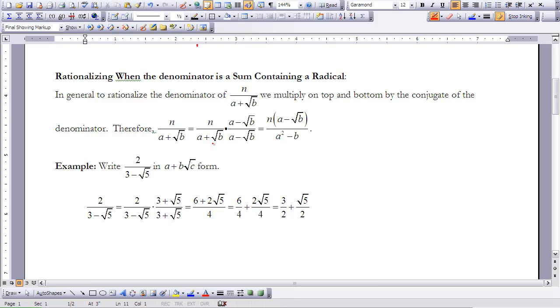Let's try this with an example problem: 2 over 3 minus the square root of 5. So we're going to take the conjugate of that, so that would be 3 plus the square root of 5 right here. Remember, 3 plus the square root of 5 over 3 plus the square root of 5 is the same as multiplying by 1, so I'm not changing its value, I'm just changing how it looks. So 2 times 3 and 2 times the square root of 5 gives me 6 plus 2 root 5.